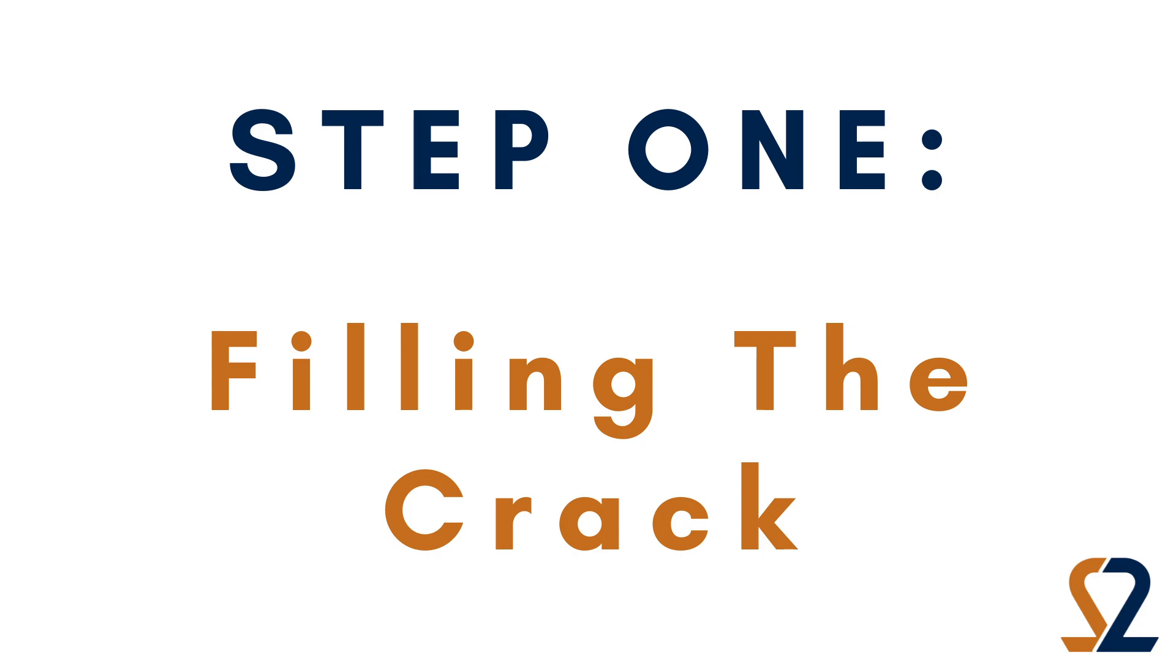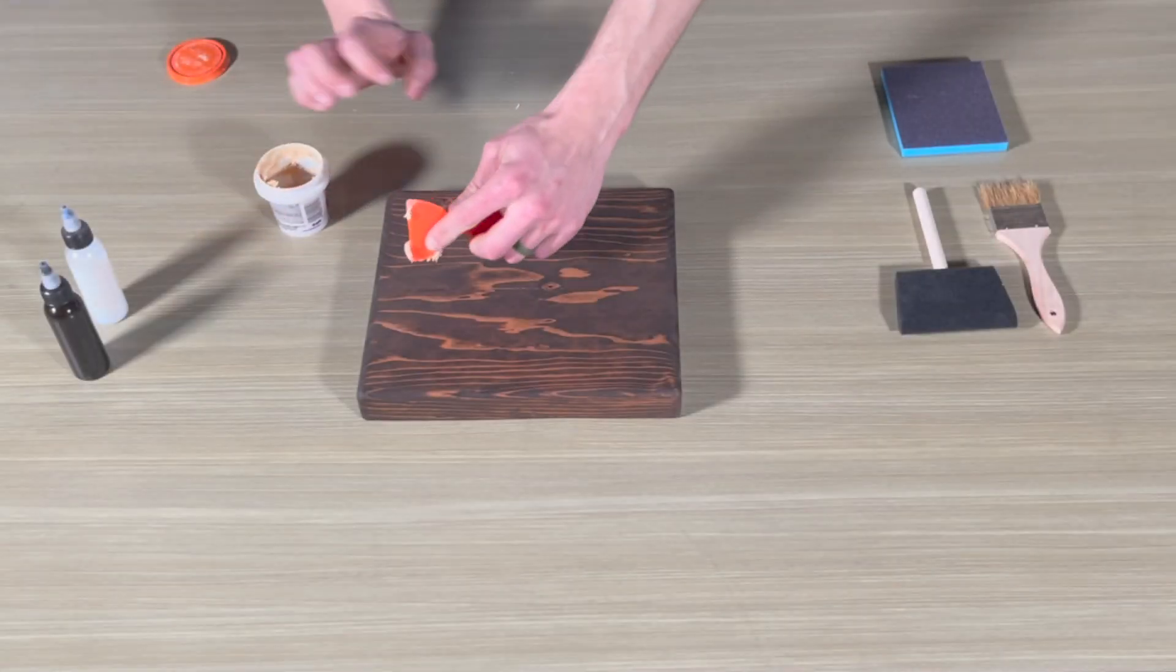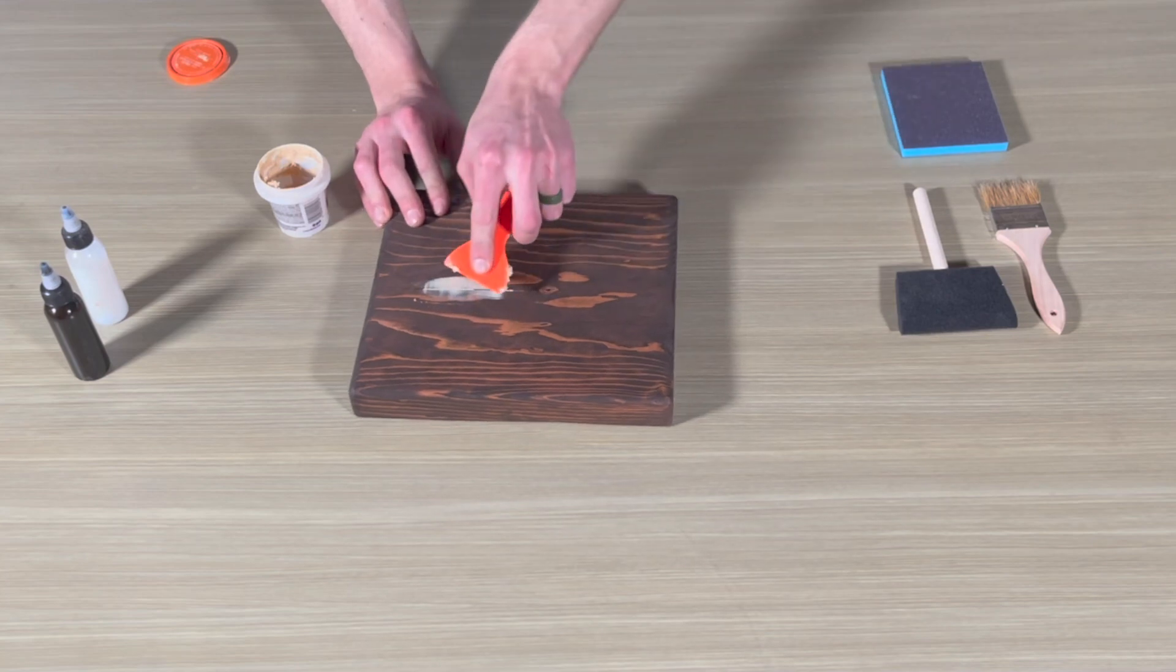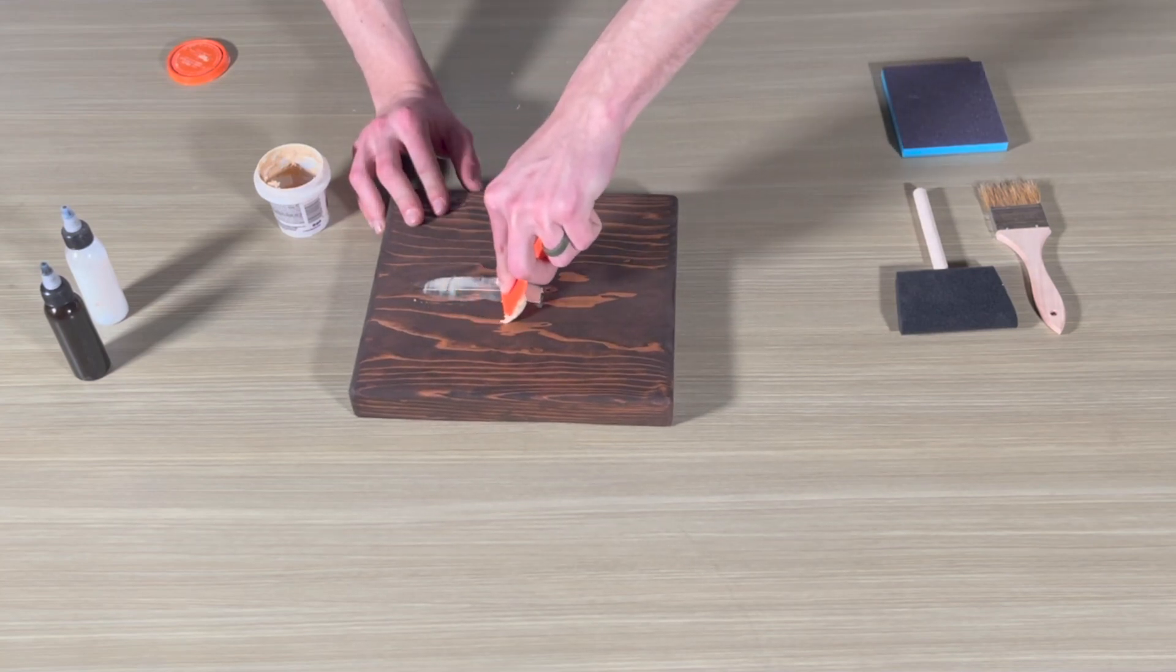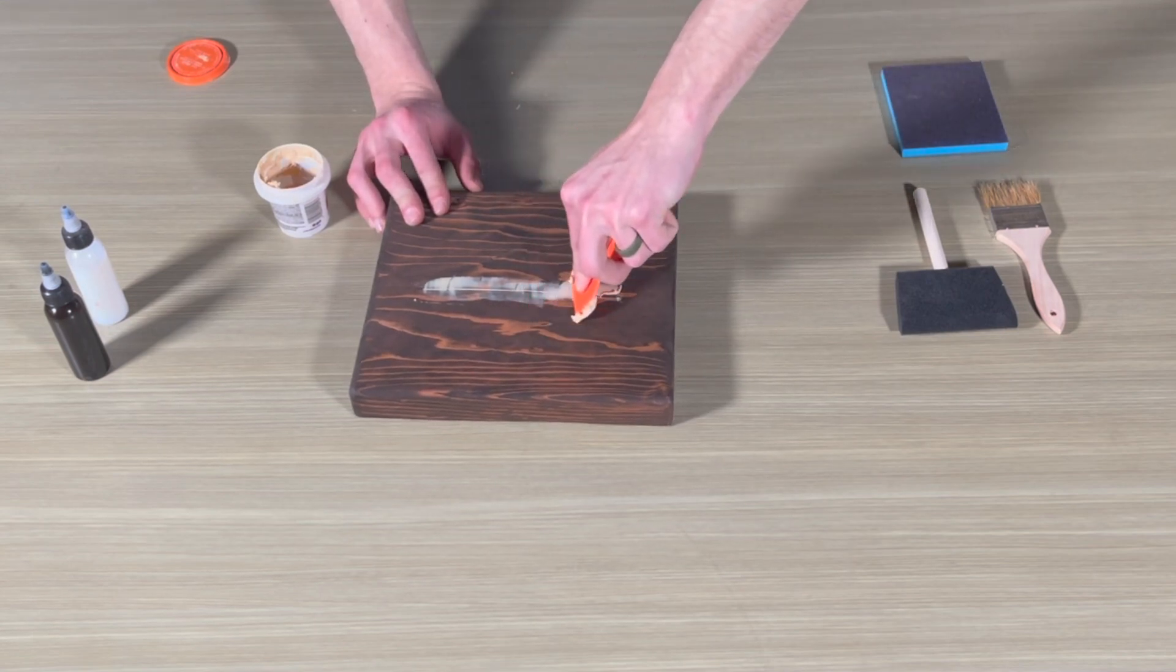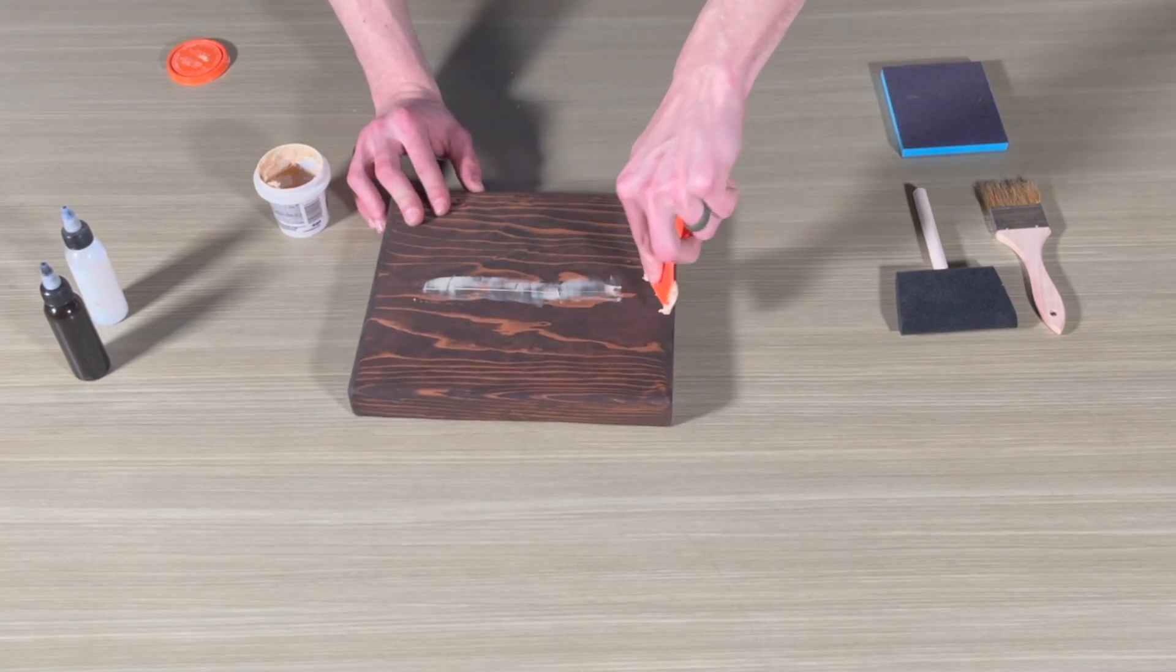Step 1. Filling the crack. Using your wood filler and a putty knife, push the wood filler into the cracks or knots you'd like to repair. Scrape the excess off with your putty knife. This will save you time when it comes time to sand.